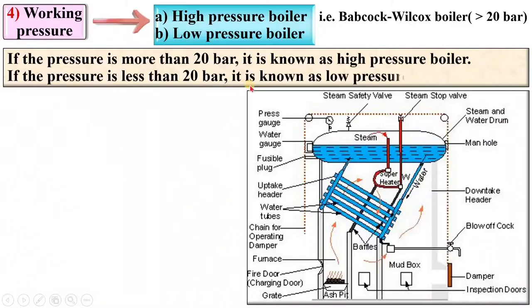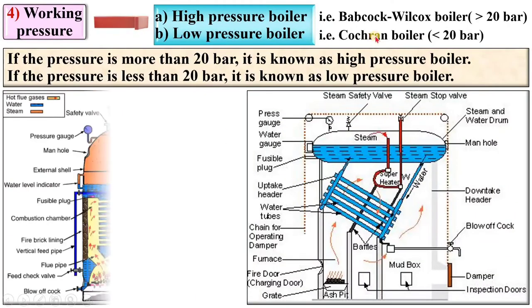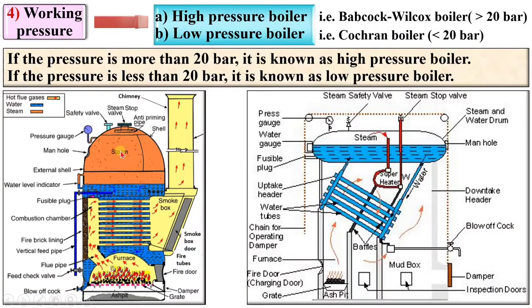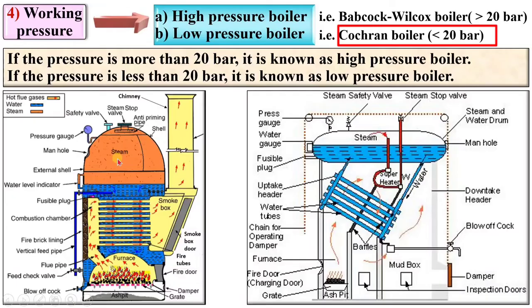If the pressure is less than 20 bar, it is known as a low pressure boiler. The example is the Cochran boiler. Here you can see the steam is accumulated in the upper part of the boiler drum, where the pressure of the steam is below 20 bar.